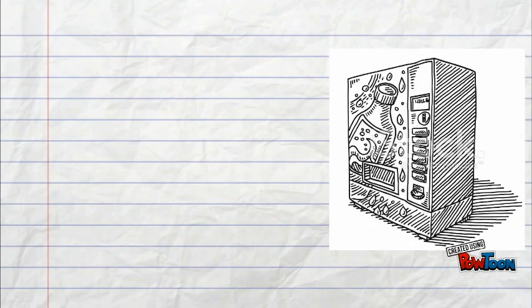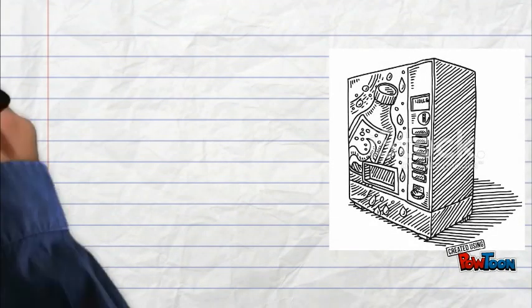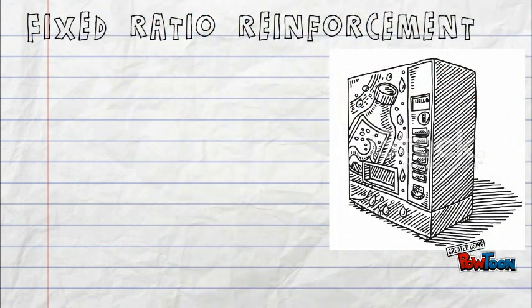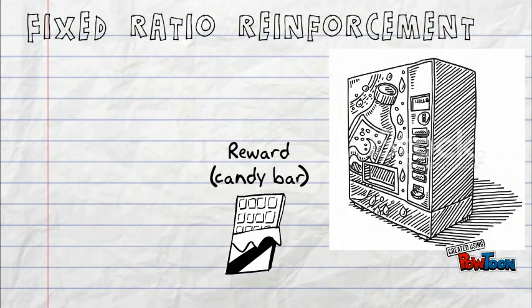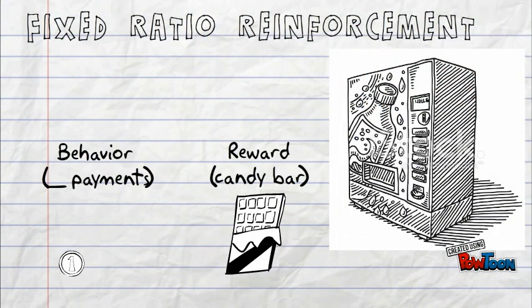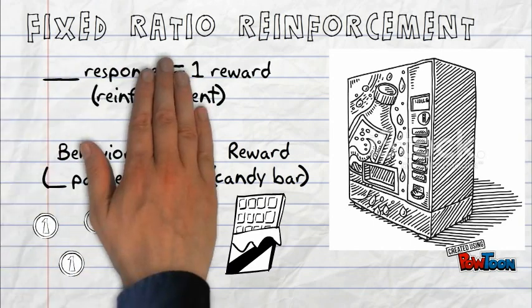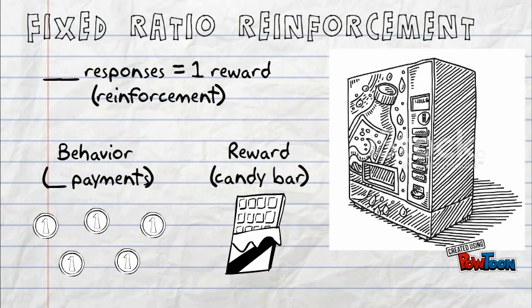What if we changed the schedule of reinforcement? If the vending machine had fixed ratio reinforcement, it would give a candy bar after a fixed number of payments, such as every five quarters put in. Every five times the customer shows the desired behavior, he is reinforced.